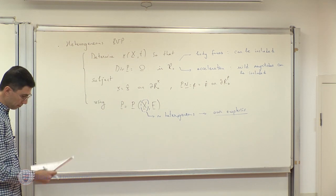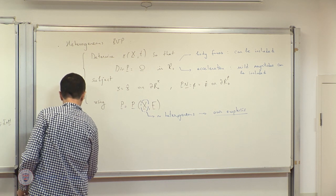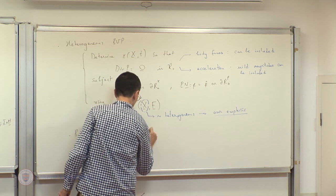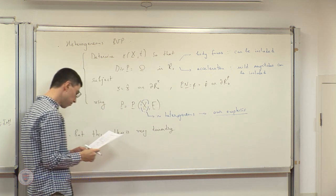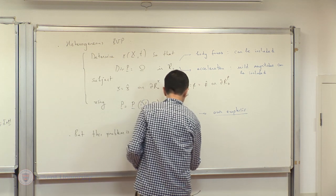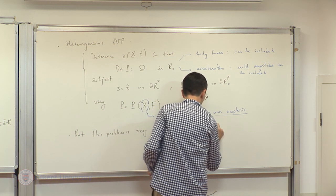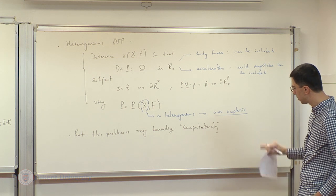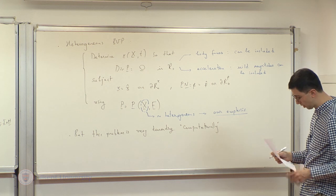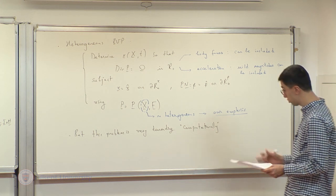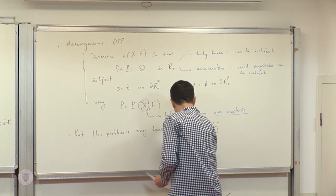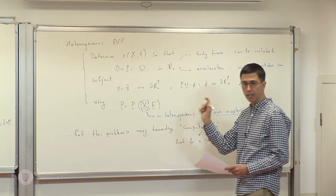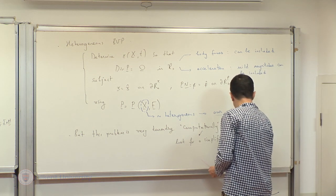That's our problem, and it is very hard. It's quite demanding computationally — even for homogeneous problems, analytical solutions are rare. In particular, the computational complexity is very demanding. So we look for a simplification, and that simplification is where the second part of the topic — the concept of homogenization — comes in.